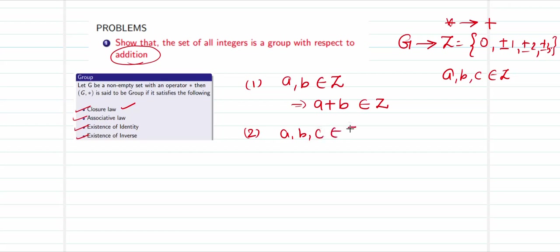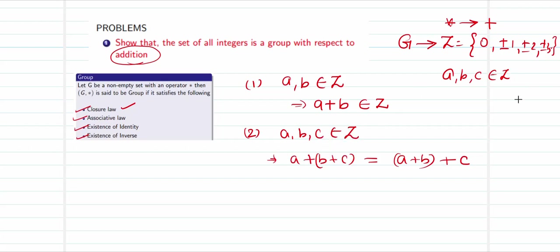For the associative law: for any three elements a, b, c that belong to the set of integers, I know that (a + b) + c is the same as a + (b + c). This holds true for all elements a, b, c belonging to the set of integers. Therefore, the associative law is also true.